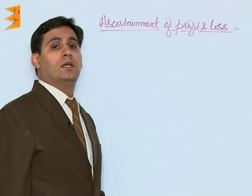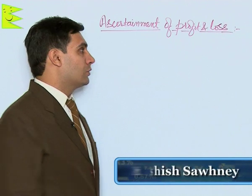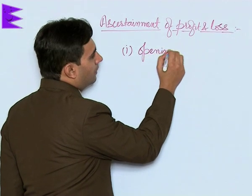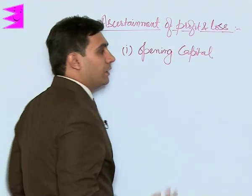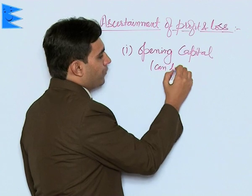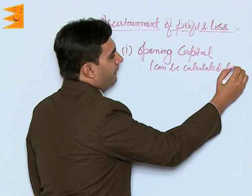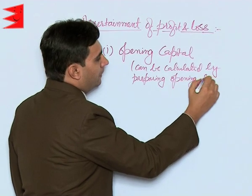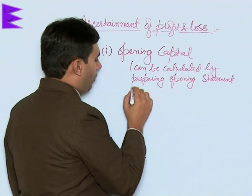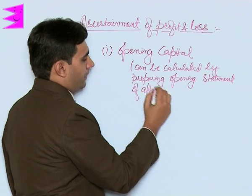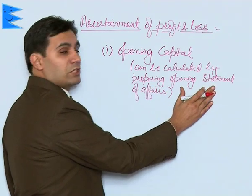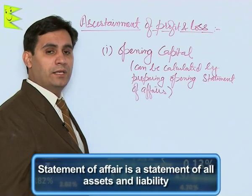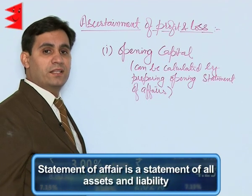How do we ascertain profits and losses through incomplete records? The first information we require is opening capital — that is, capital at the beginning of the year. This capital can be calculated by preparing an opening statement of affairs. A statement of affairs is a statement which shows assets and liabilities of a business as on a particular date.